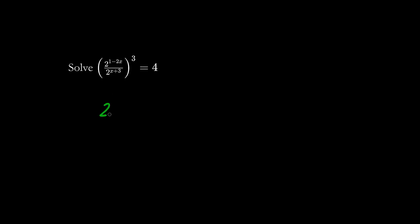Let's clean up the insides first. We have the same base, so we subtract the numerator's exponent minus the denominator's exponent, giving x plus 3. And this whole expression is all cubed, equals 4.